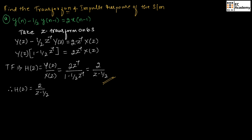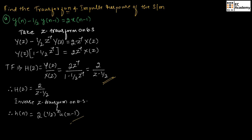From this transfer function, let us find the impulse response. If we take the inverse Z-transform on both sides, therefore we can write h(n) = 2 · (1/2)^n · u(n-1). So this is the impulse response of the given problem.